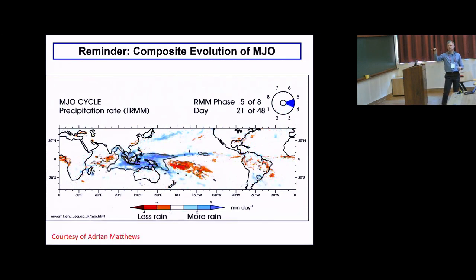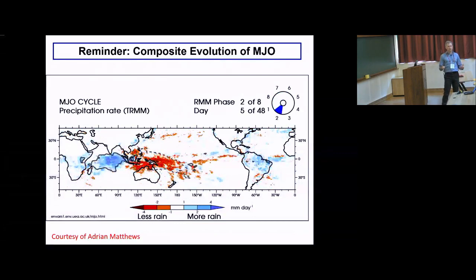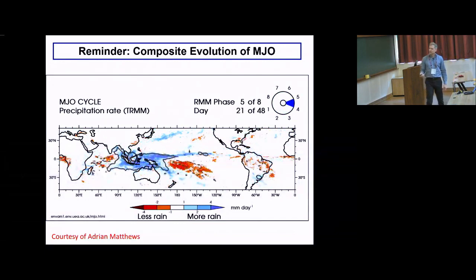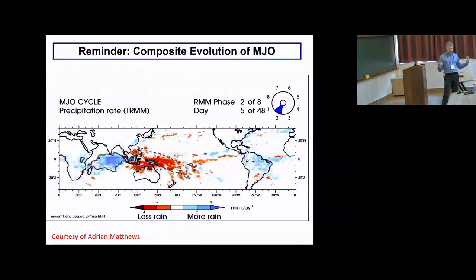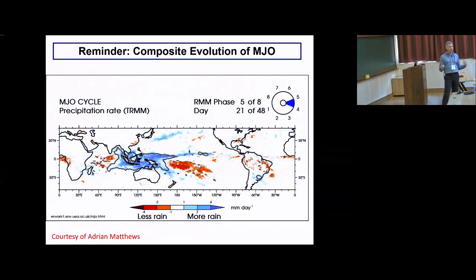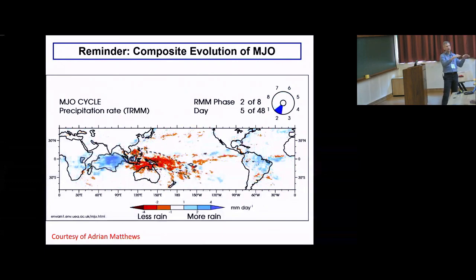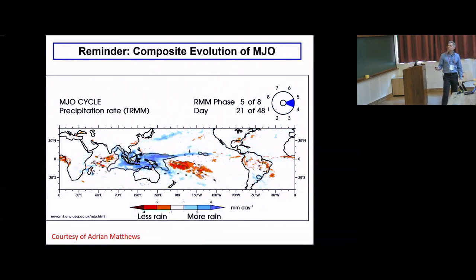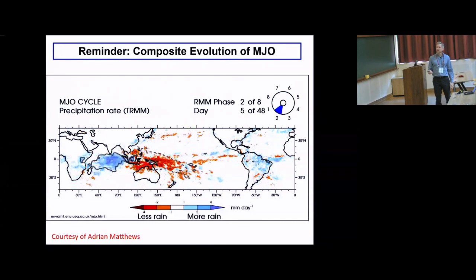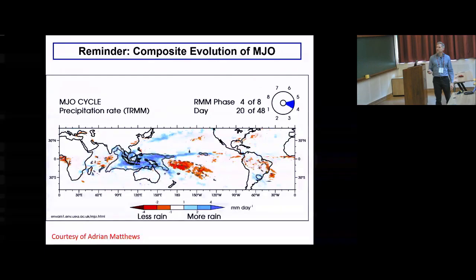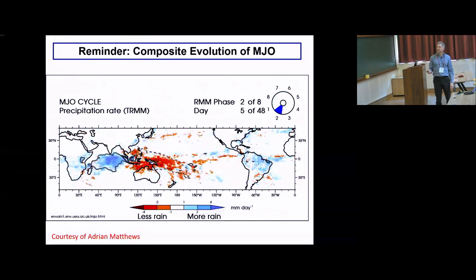This is a composite evolution of the Madden-Julian Oscillation. It's a composite life cycle derived by Adrian Matthews at the University of East Anglia using the real-time MJO index derived by Wheeler and Hendon in 2004 — an EOF-based index. This whole cycle takes about 48 days, and what you see is MJO convection starting in the Indian Ocean, moving east with time, doing funny things in the maritime continent, then re-emerging over the western Pacific, and in wintertime dying just to the east of the date line.